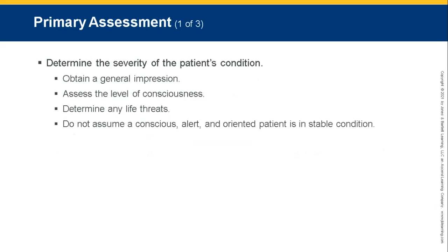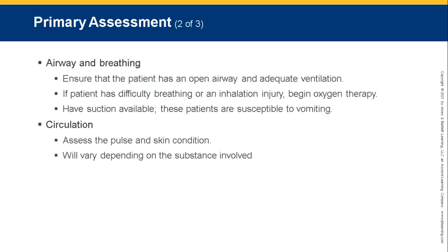Primary assessment: determine the severity of the patient's condition, obtain a general impression of the patient and environment, assess level of consciousness, and determine if any life threats are present and address them. Do not assume a conscious, alert, and oriented patient is in a stable condition. Assess airway and breathing — ensure the patient has an open airway and adequate ventilation. If the patient has difficulty breathing or an inhalation injury, begin oxygen therapy. Have suction available, as these patients are susceptible to vomiting, and some substances can burn or damage the airway if vomited up.